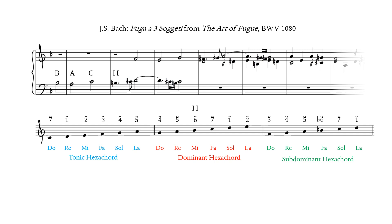B and B-flat both occur in the larger hexachordal system, so the German musicians who came up with their note names chose two different names for B and B-flat. All four letters of Bach's name can therefore be transcribed into musical notes, and even though the notes were produced in a somewhat arbitrary translation, Bach was able to harmonize and counterpoint this four-note motif in several different highly creative ways over the course of his career.